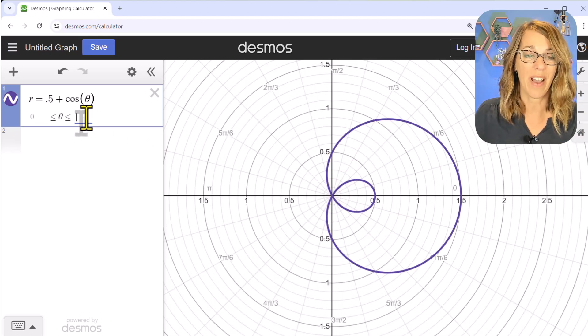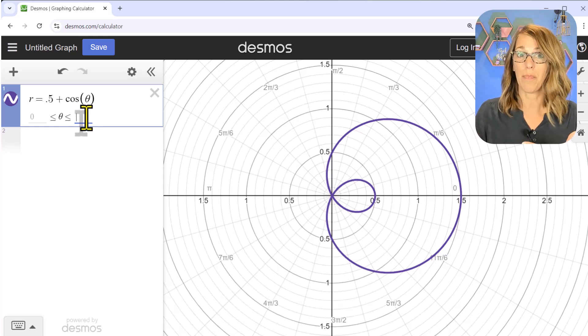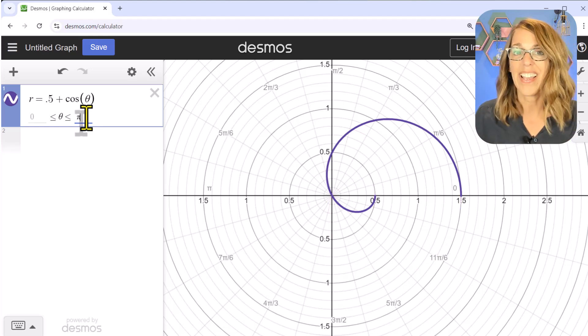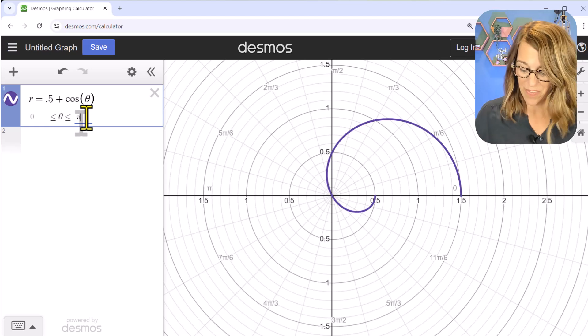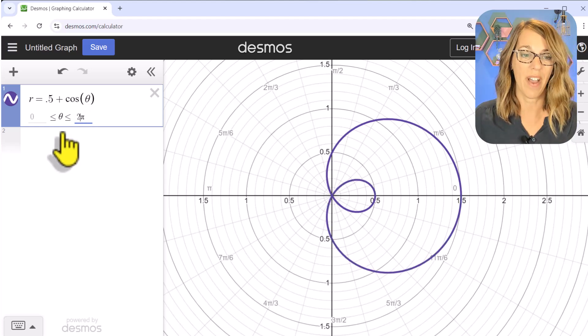So I'm going from 0 to 2π. I could certainly change this upper bound, so instead I go just to π and I get half of that graph. I do want it to go to 2π.